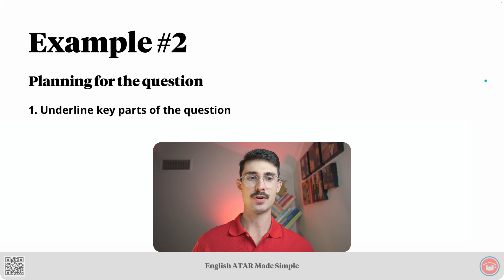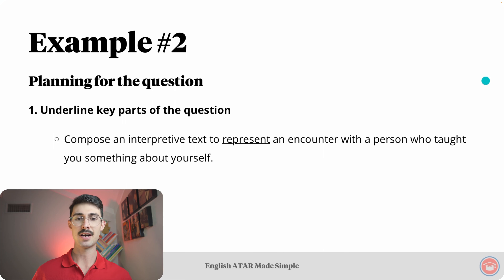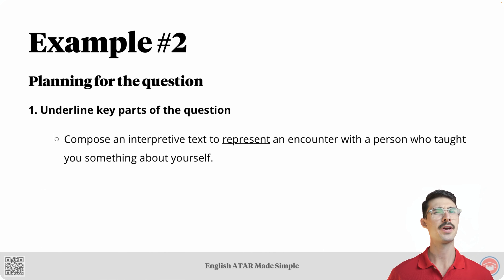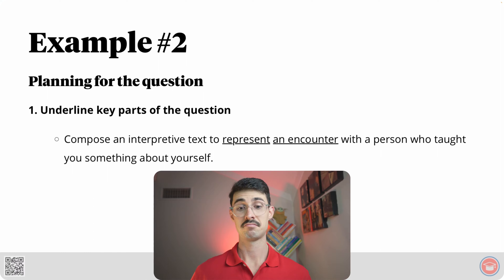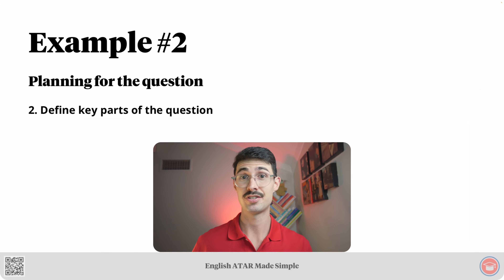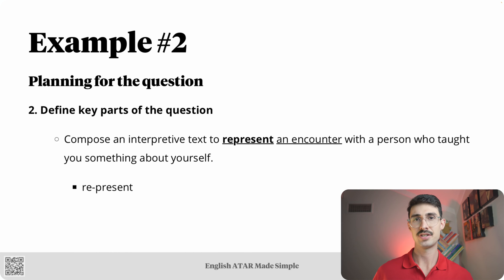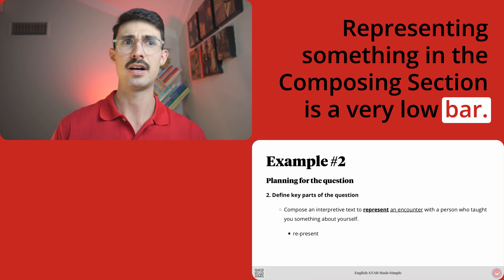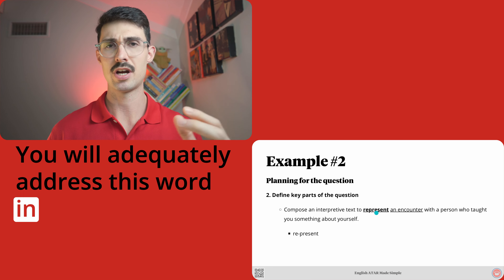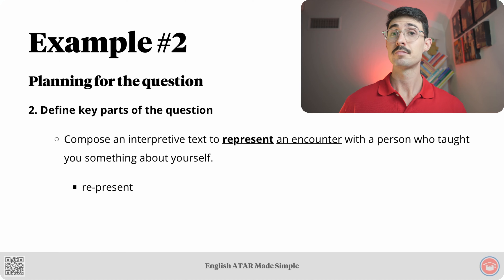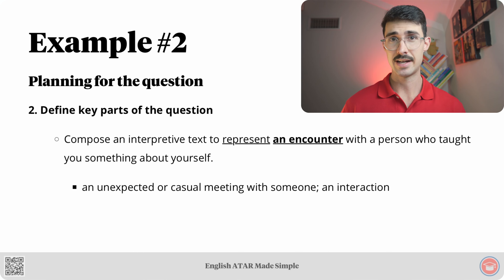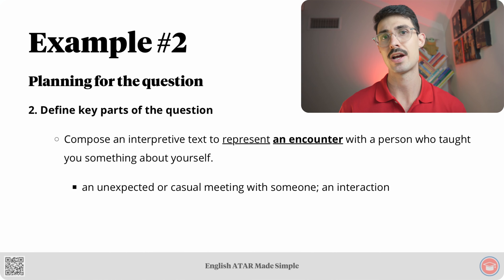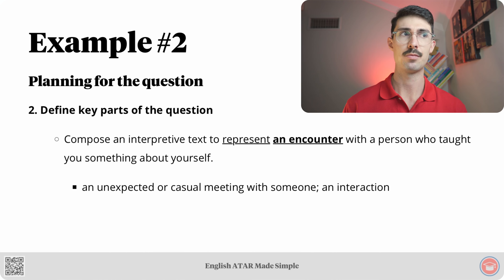Let's plan for it. Step number one: underline key parts of the question. First key part: the word 'represent.' Second key part: the word 'an encounter.' Step number two: define those two key parts. The word 'represent' means represent — representing something in the composing section is a very low bar. You'll adequately address this word simply by describing an encounter. An encounter is an unexpected or casual meeting with someone — an interaction. Therefore, you should make sure that whatever you describe could be said to be an example of this definition.